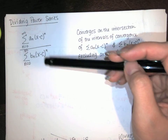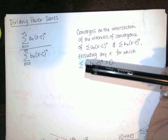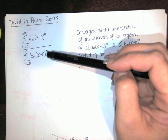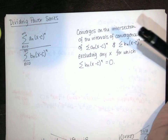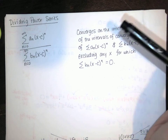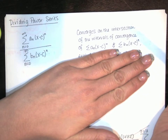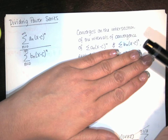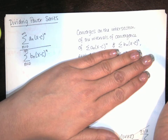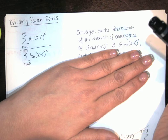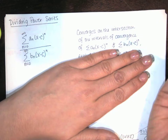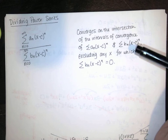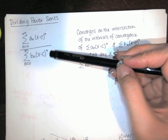Now, this quotient of the two power series will converge on the intersection of the intervals of convergence of both series. So we need x values for which both series converge at the same time. But there's one extra qualifier when dividing series: the denominator can never be zero. So we have to exclude any x values that cause the series in the denominator to converge to zero.